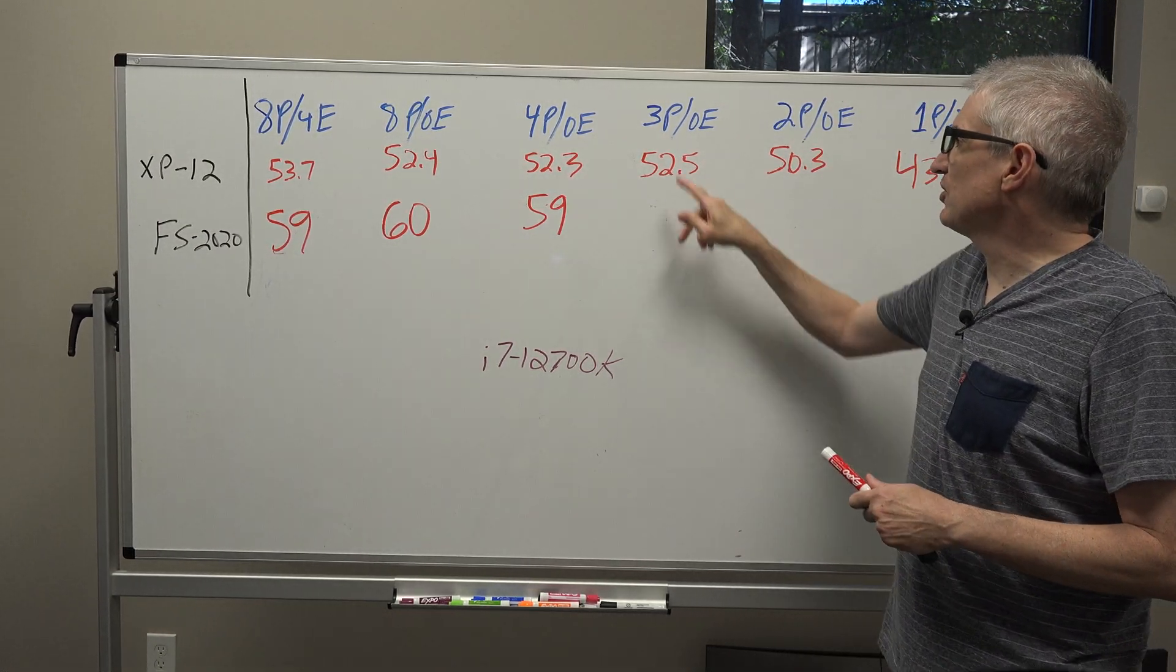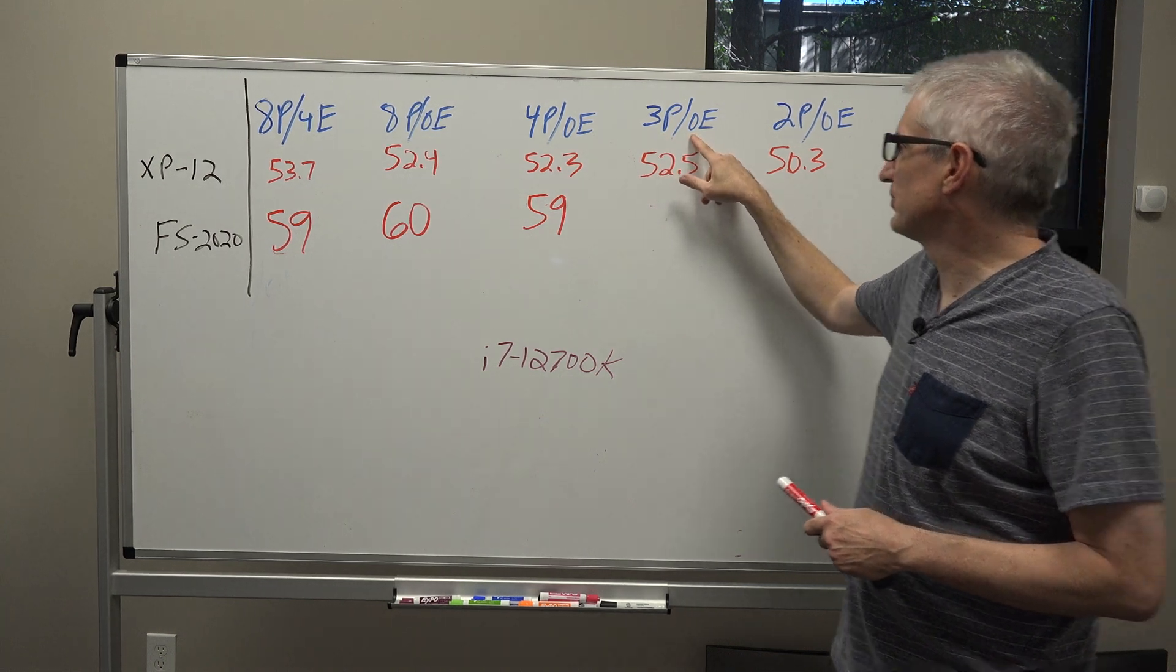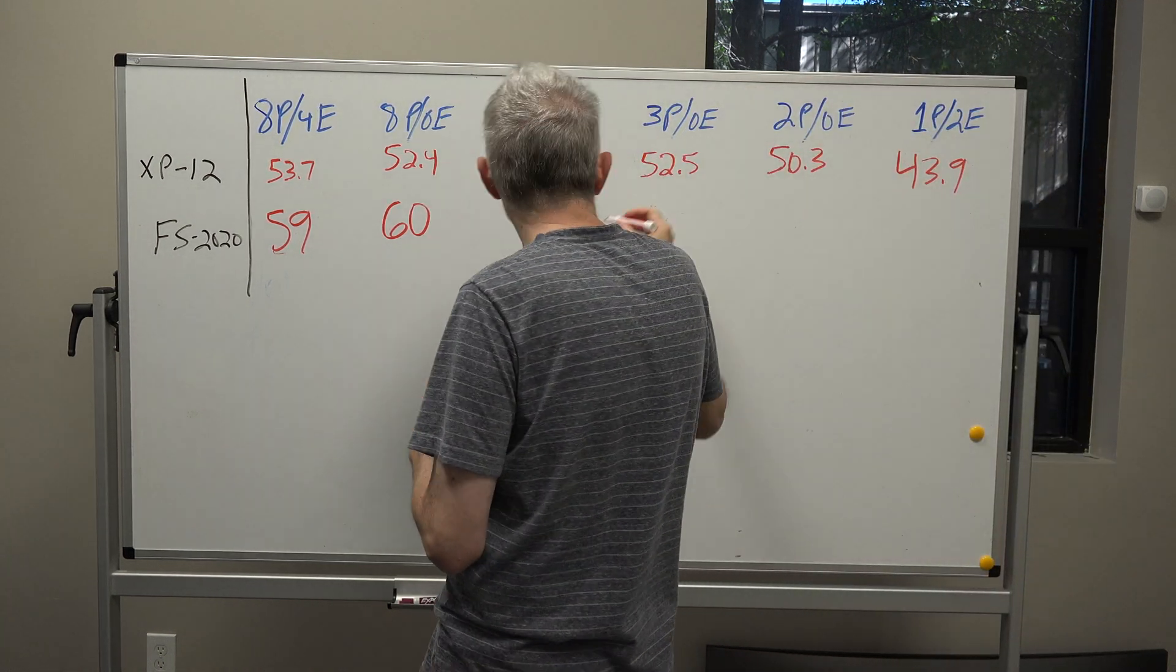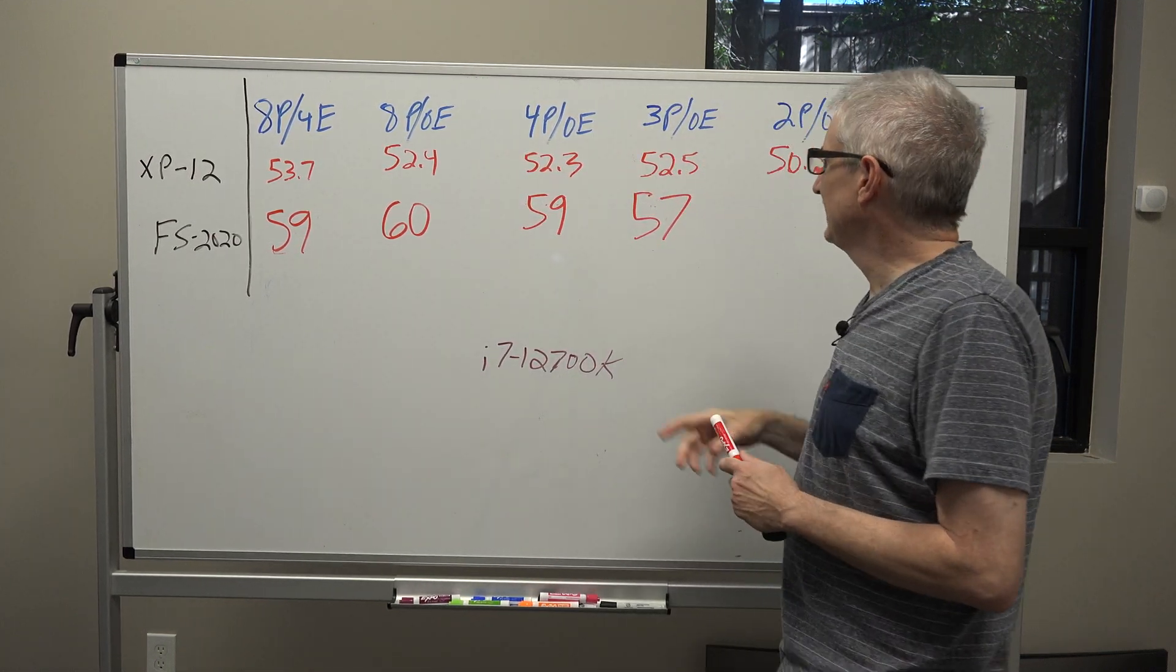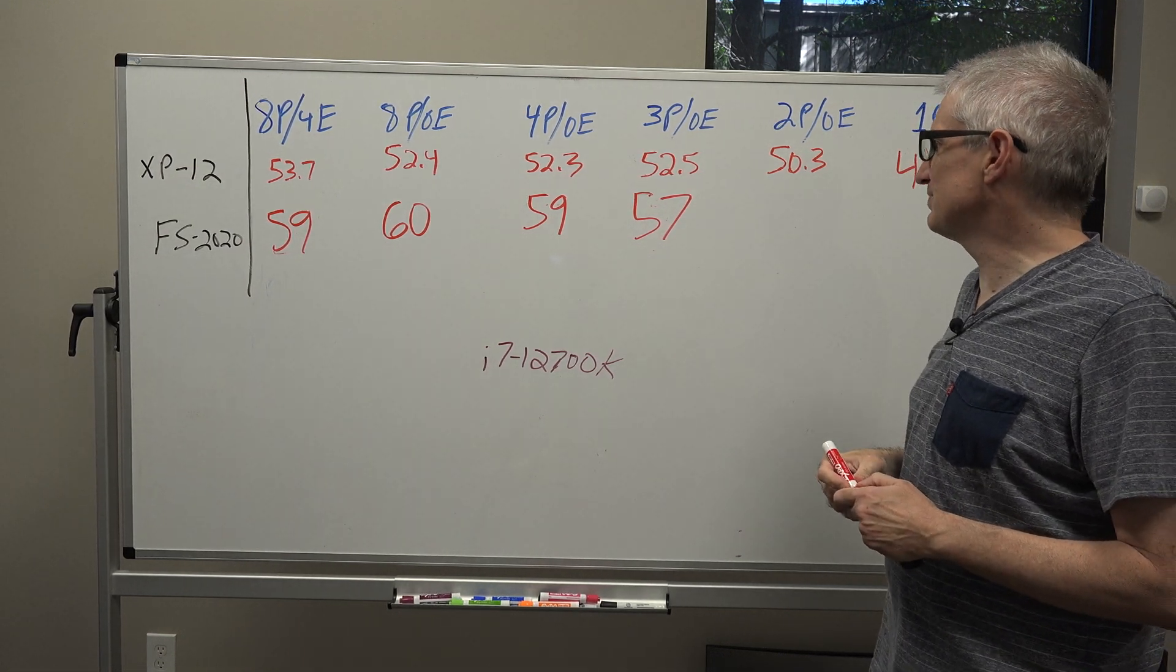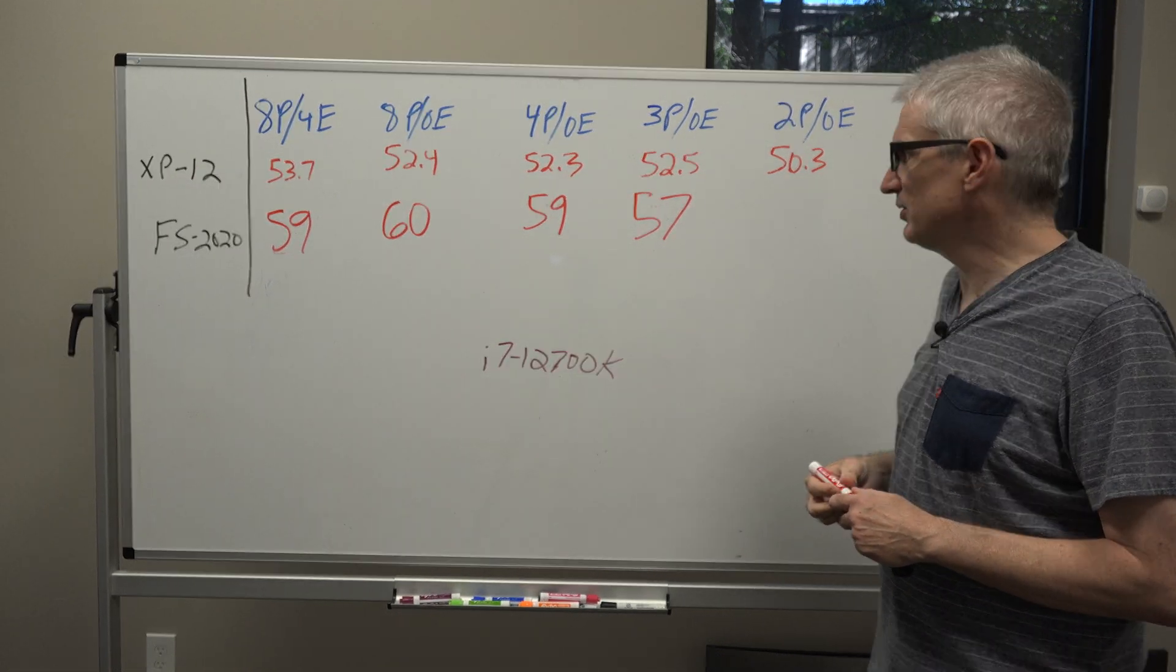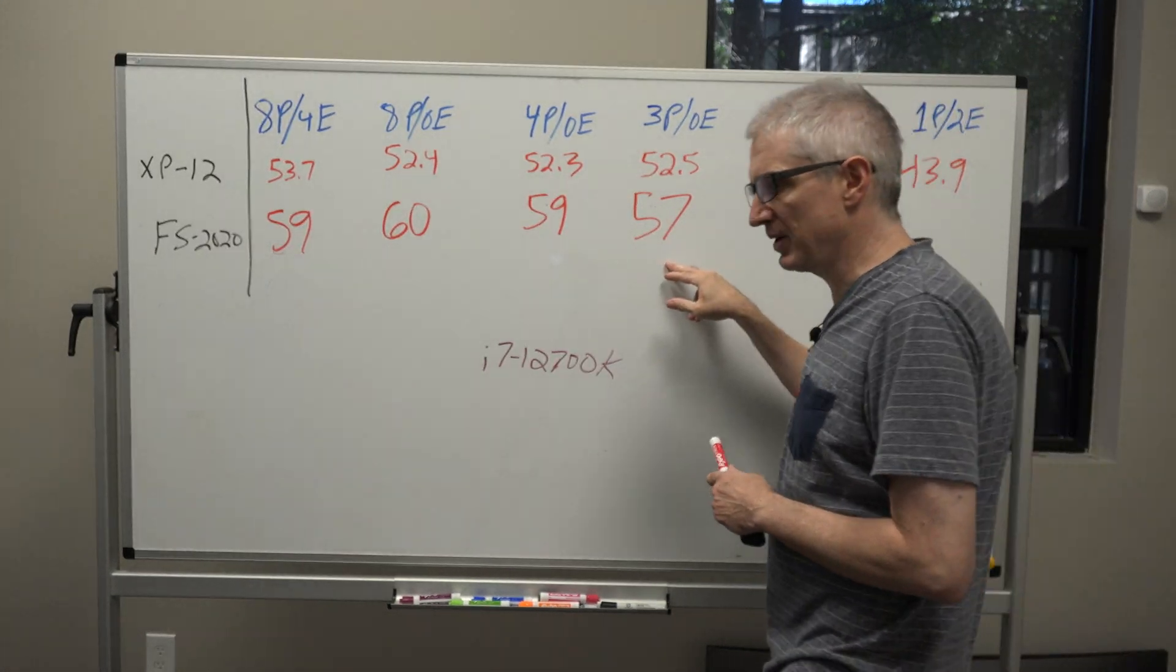So take us down to three performance cores, no efficiency cores, and the frame rate we got was 57. Again, it's a little bit more of a change but it could be just a run-to-run variance. You're not going to notice this with your eye. That's the main point.